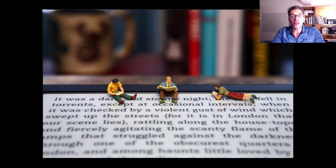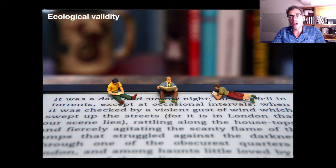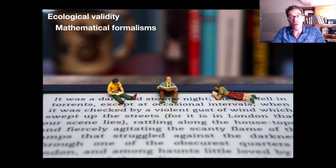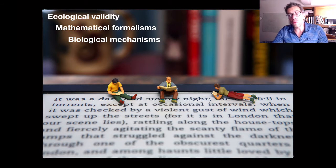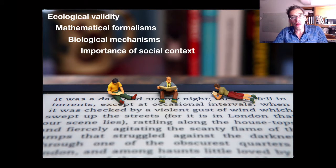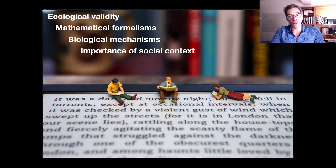One's exquisitely controlled lab experiment is another's contrivance. What is to one a powerful mathematical formalism is to another just gibberish. What some call a neural mechanism others think of as oversimplified biological reductionism. Some focus exclusively on individual level performance while others feel that theories that don't take into account social context are woefully incomplete.